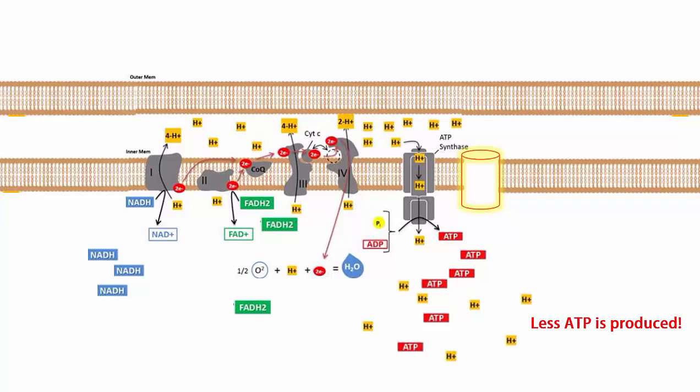And when the hydrogen ions go through this hydrogen leak channel, no ATP is made because this hydrogen leak channel does not have this turbine setup that produces ATP out of inorganic phosphate and ADP.